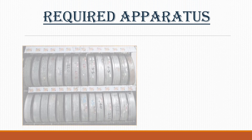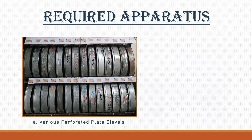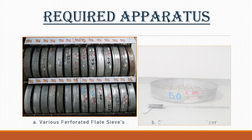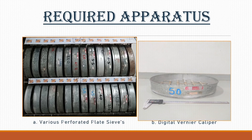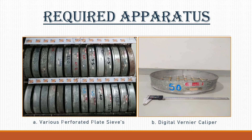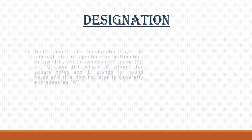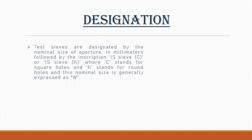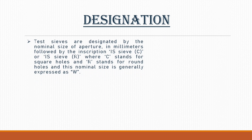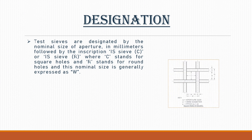The apparatus used in this test includes various perforated plate sieves and a digital vernier caliper. Test sieves are designated by the nominal size of aperture in mm, followed by the inscription IS Sieve C or IS Sieve R, where C stands for square holes.